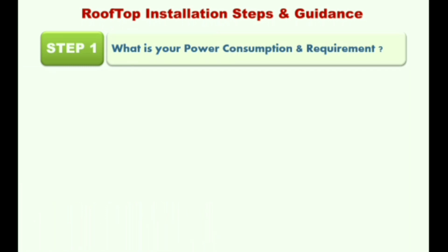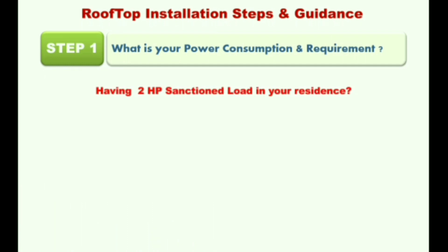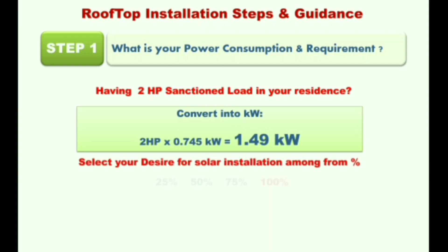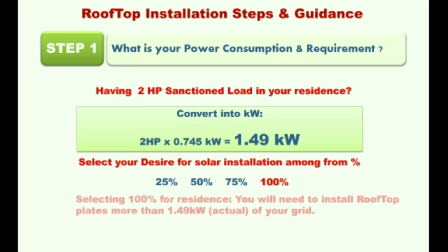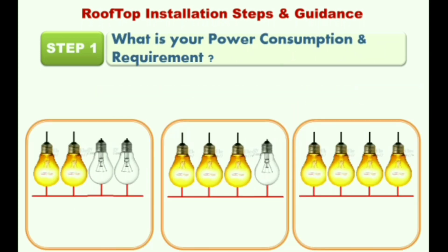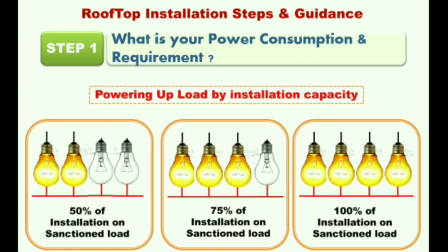Here is a more detailed example for selecting the appropriate rooftop capacity. If you have a 2 HP connection in your bill copy, first convert from HP to kW. Then decide your desired category — 25%, 50%, 75%, or 100% free energy. If you need fully 100% free energy from solar, you need to select more than the sanctioned load, that is greater than 1.45 kW, so a 2 kW connection. This picture shows solar plant selection as per different categories.